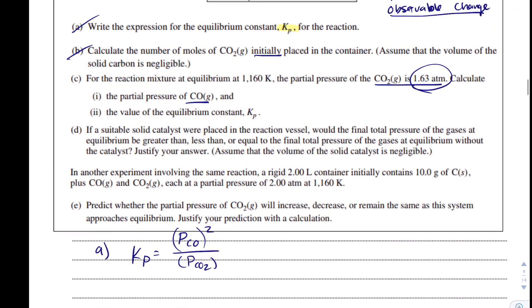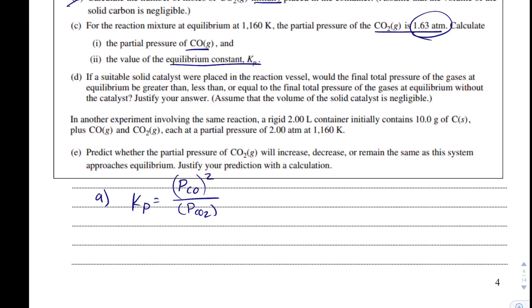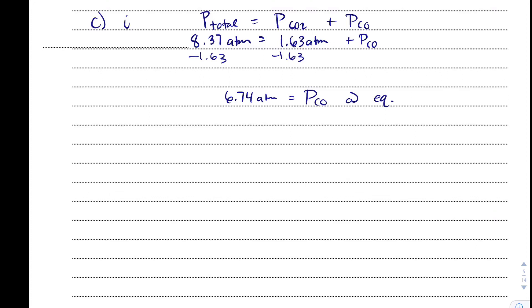And that's specifically the pressure of carbon monoxide at equilibrium. Now part two says, what is the value of the equilibrium constant Kp? So I'm going to take this equation and I'm going to copy it, and we're going to plug in what we can to see if we can get Kp.